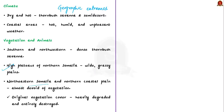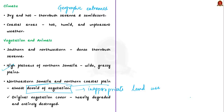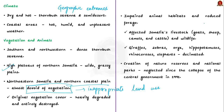Northeastern Somalia and large parts of its northern coastal plains are almost devoid of vegetation, mainly due to inappropriate land use. The original vegetation cover, especially in northern Somalia, has been heavily degraded and in various places entirely destroyed. This progressive destruction of plant life has impaired animal habitats and reduced forage for livestock, affecting Somalia's livestock and wildlife.